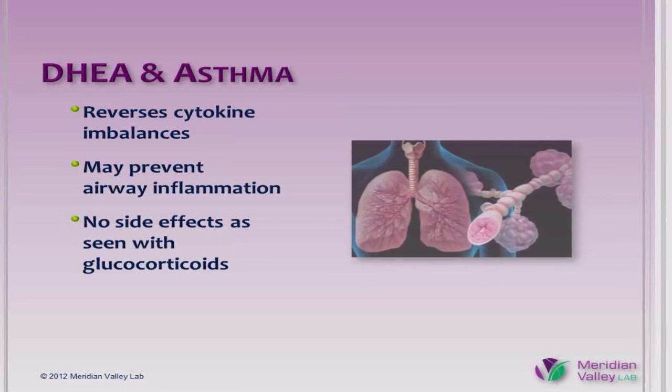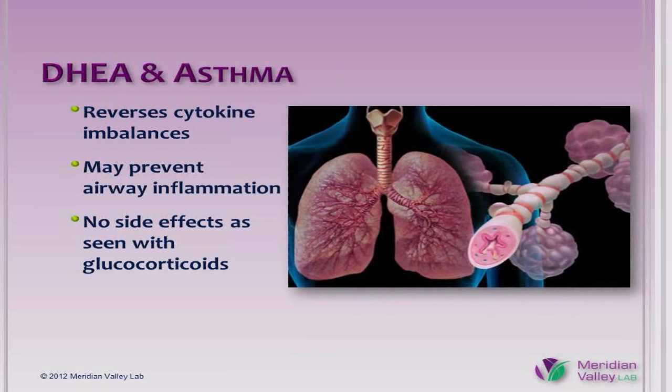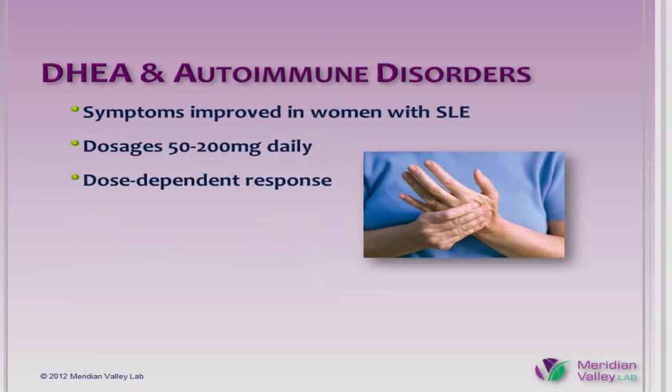DHEA and asthma. DHEA is able to reverse cytokine imbalances associated with asthma and may prevent and attenuate allergic inflammation in the airways without the undesirable side effects of glucocorticoids. One study concluded the steroid-sparing effect observed with DHEA clinically could appear especially favorable in asthmatic patients receiving oral treatment and those inhaling high doses of glucocorticoids. In addition, DHEA might prove useful in reversing relative glucocorticoid insensitivity in patients with corticosteroid-resistant asthma.